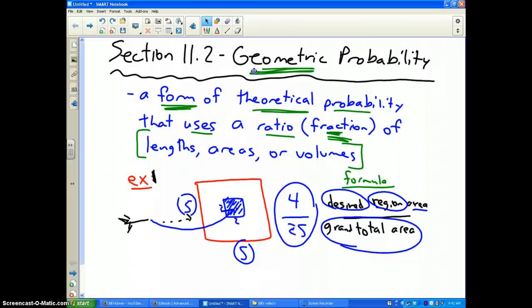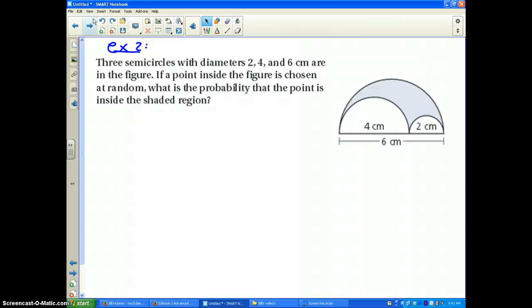Now, obviously, the figures are going to be more complex, so let's take a look at this one. Please pause the video and write this one down. It says three semicircles have diameters 2, 4, and 6 in the figure. If a point inside the figure is chosen at random, what is the probability that the point is inside the shaded region?